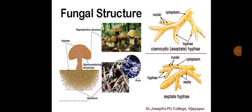In this slide you can see fungal structure — the fungal body consists of long slender thread-like structures called hyphae. The network of hyphae is known as mycelium. Some hyphae are continuous tubes filled with multi-nucleated cytoplasm; these are called coenocytic hyphae.